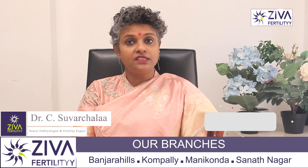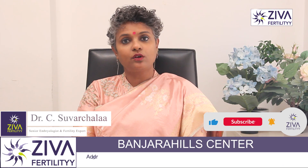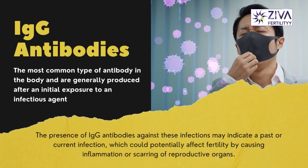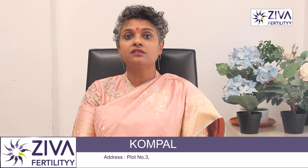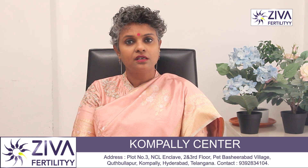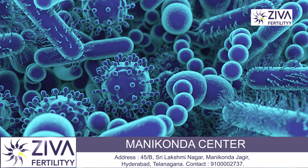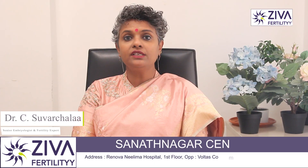Let's look at the significance of IgG and IgM in the context of infertility. IgG antibodies are the most common type of antibodies produced in the body and are generally produced after an initial exposure to an infectious agent. They are involved in providing immunity against specific pathogens such as viruses, bacteria, and parasites.